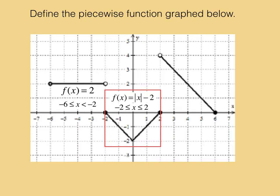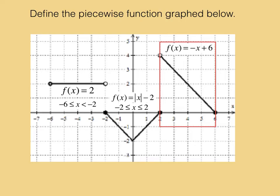The last piece is a linear function with a slope of negative 1. It would go through the y-intercept at 6. So the equation of this function is negative x plus 6. It is defined from 2 through 6, not including the endpoint at 2, but including the endpoint at 6.